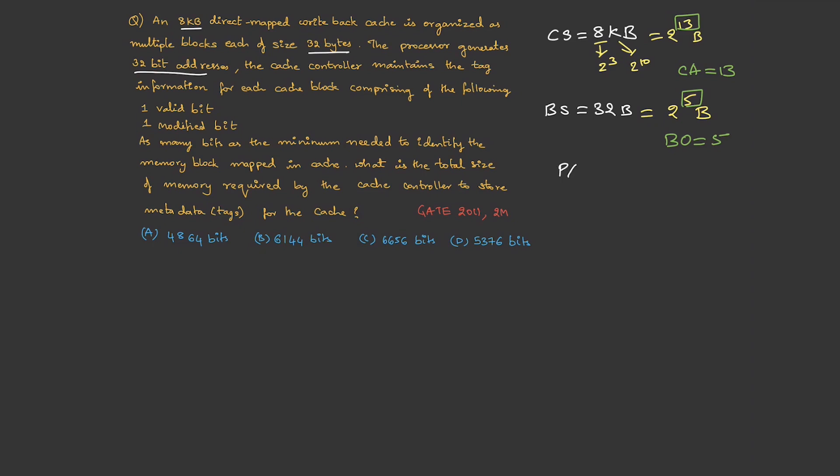So physical address is 32 bits. Now let's draw the diagram. The physical address is 32 and the cache address is 13, so the leftover bits are the tag bits, which is physical address minus cache address. So 32 minus 13, that is 19 bits. When we look at the question, we are supposed to find the total size for the tags, so basically they are asking the tag directory size.